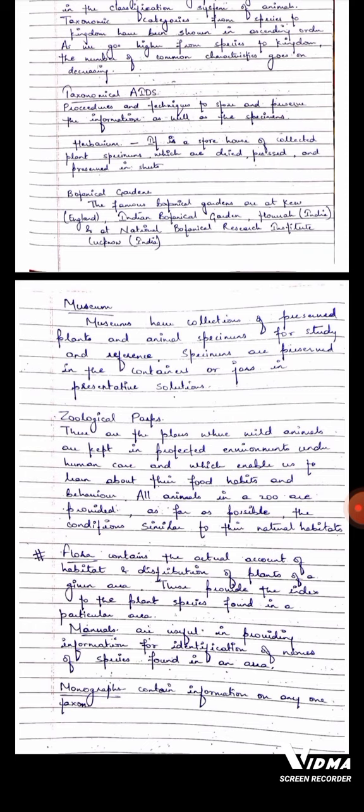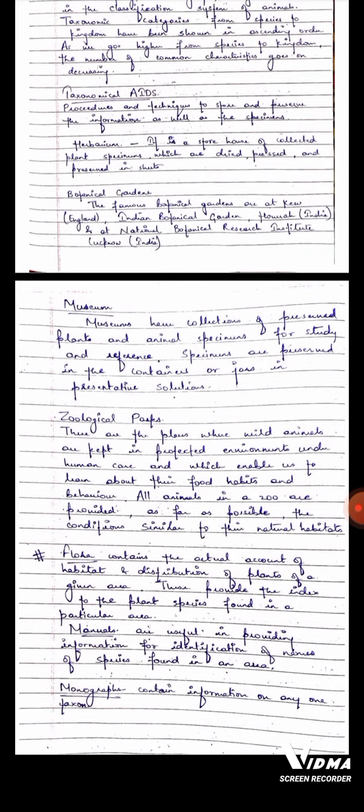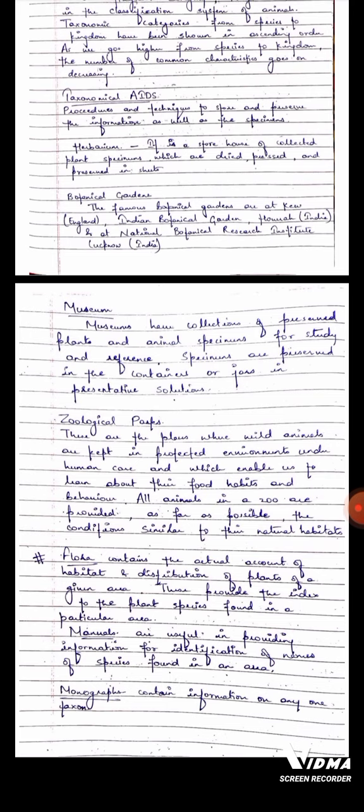These provide the index to the plant species found in the particular area. Same goes to fauna. Fauna contains the actual account of habitat and distribution of animals of a given area. Flora has plant species and fauna has animal species. You can differentiate in these two terms.